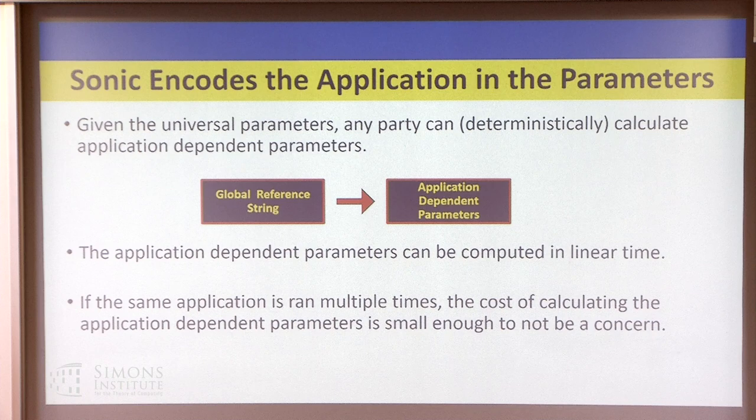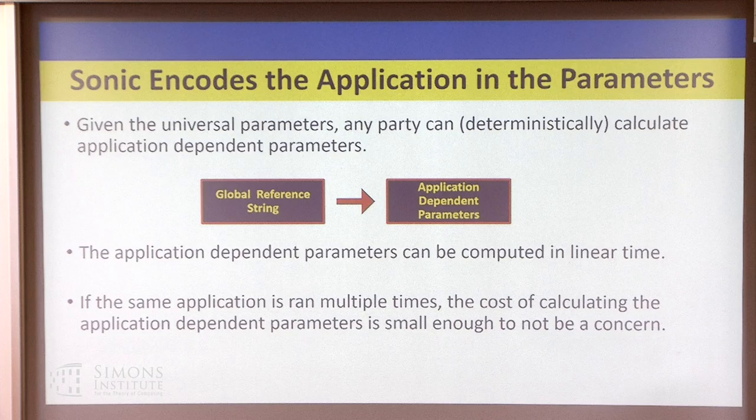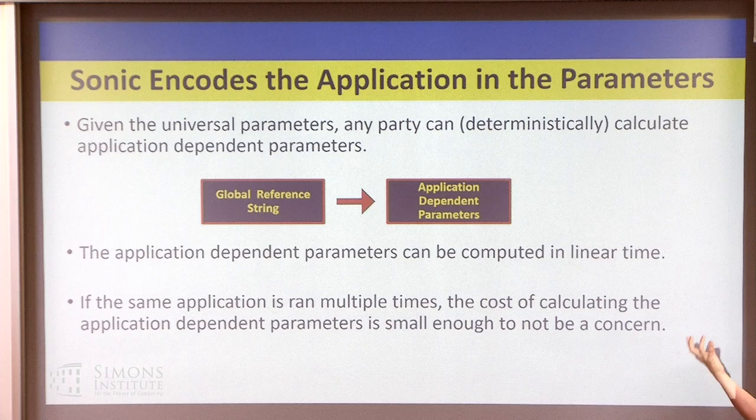If we're talking about making the verifier smaller than the prover, this is actually impossible because the verifier needs to read the program. The way we get around this is a one-time derivation process, where we take the output of the trusted setup and do some public computation to get structure into it — and that's the actual reference string we use for the application-specific thing.